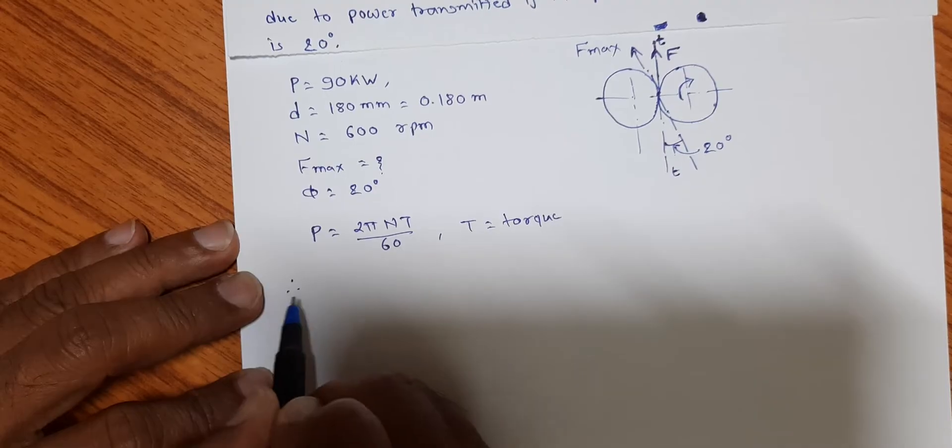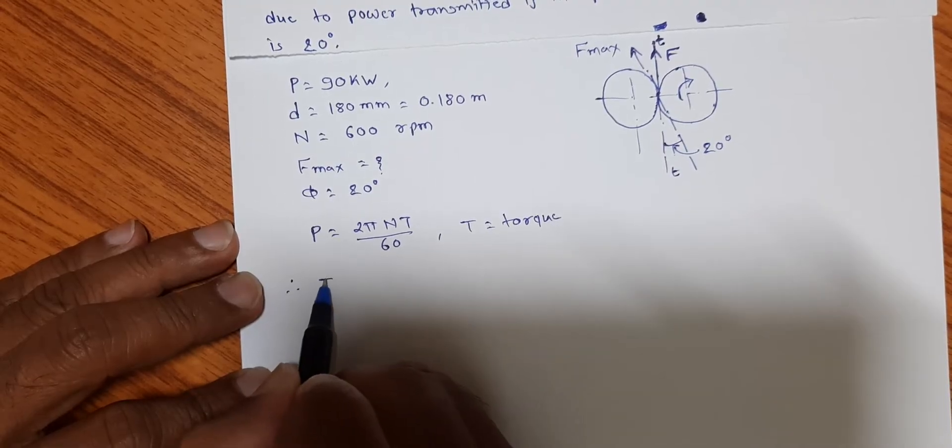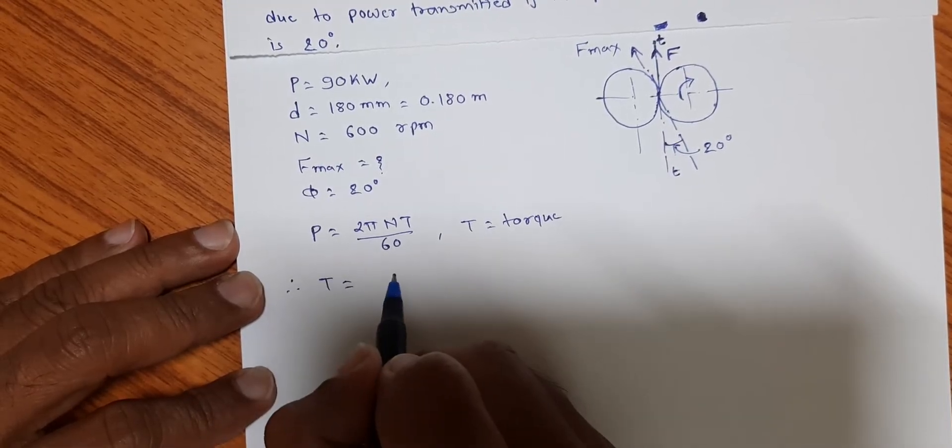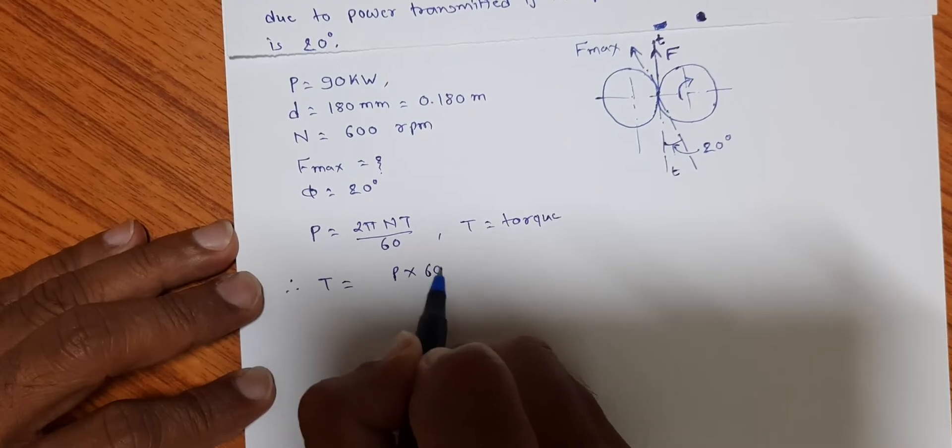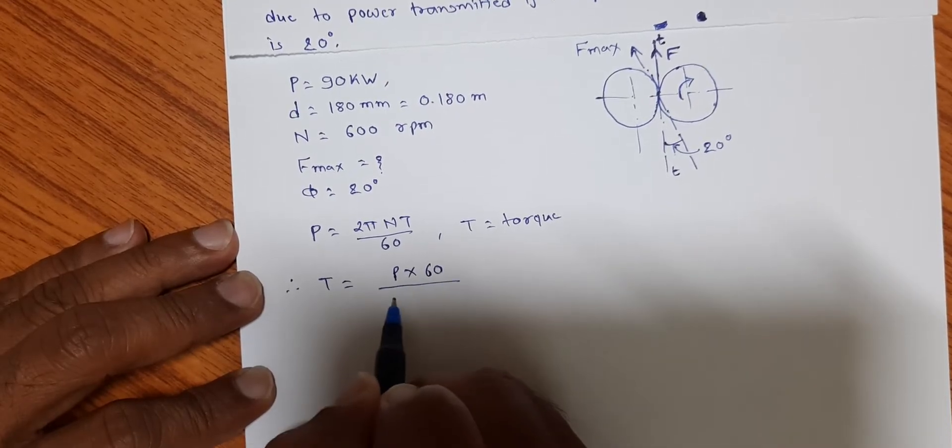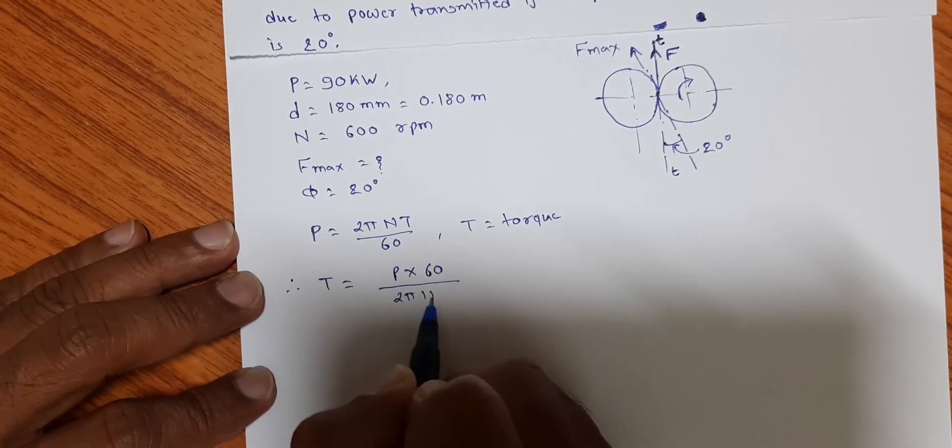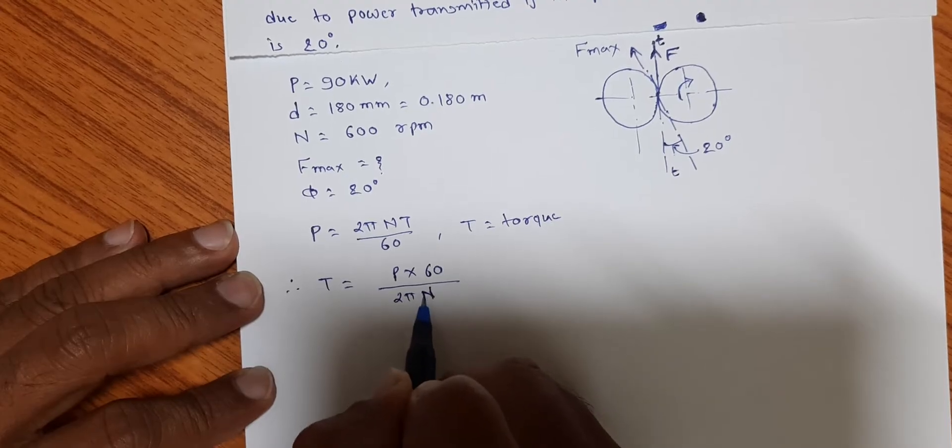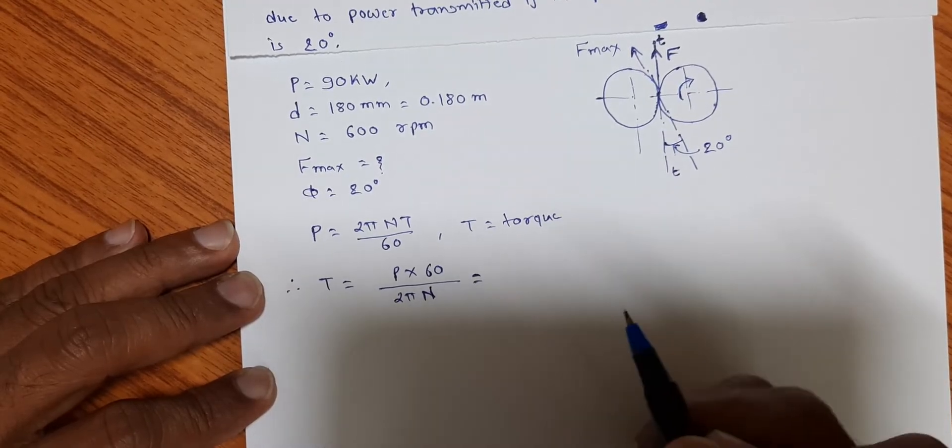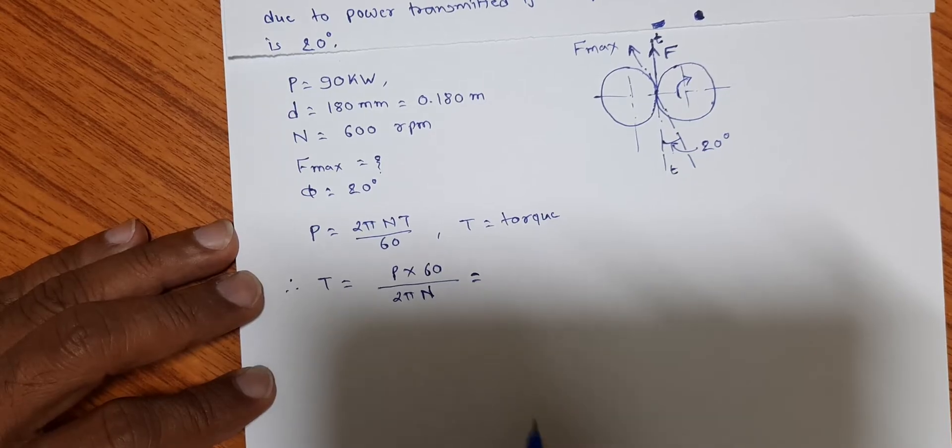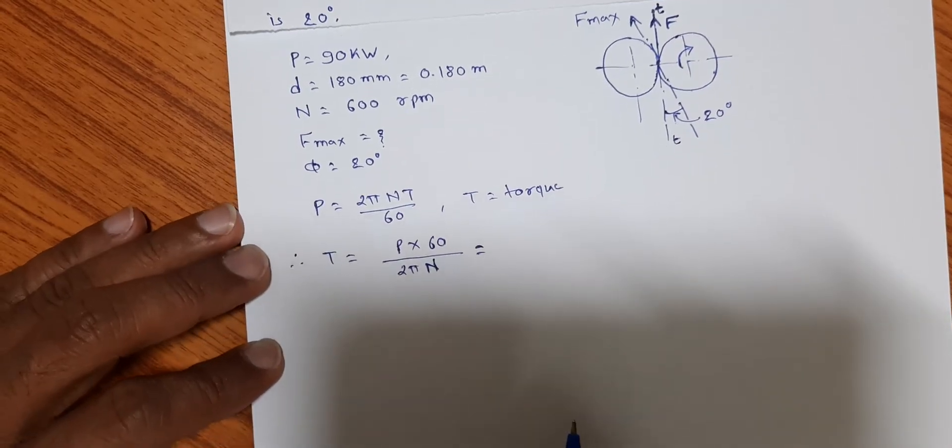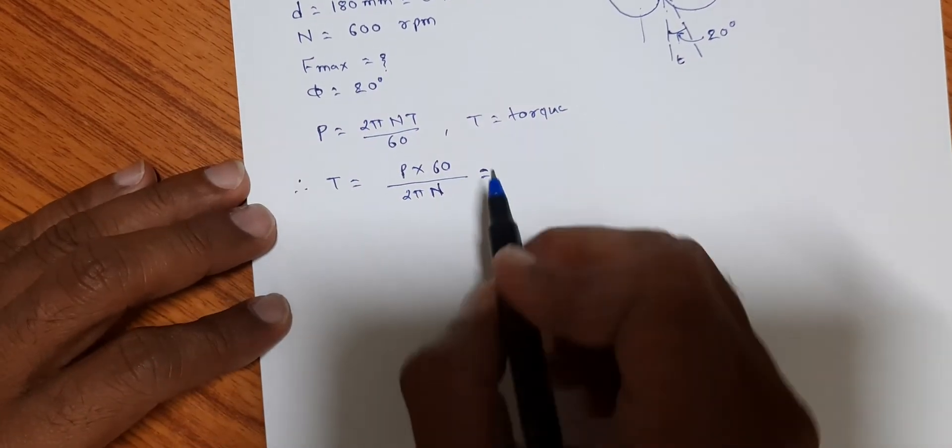So we can calculate torque acting: T is equal to P into 60 divided by 2πN. So substituting the values here, power is given in kilowatts so we are writing in terms of watts.